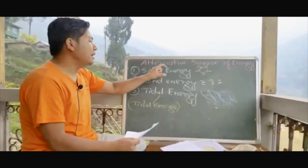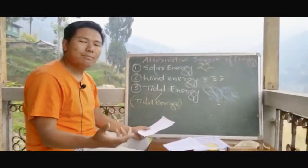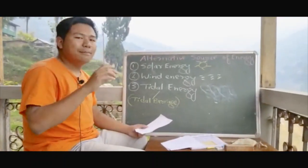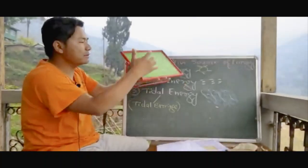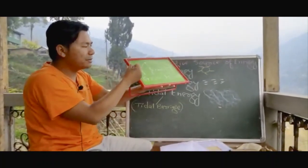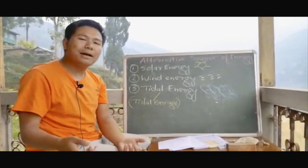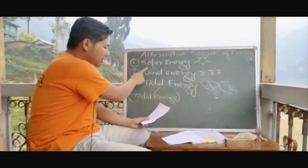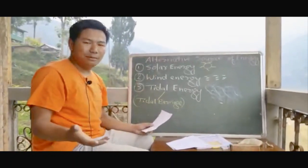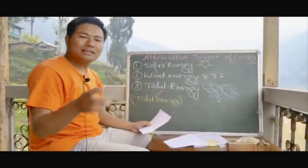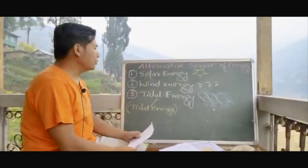Whatever energy comes from the sun, we can trap it and use it as an alternative source of energy. We can use solar energy through solar cookers, solar cells, solar batteries, and solar panels. Energy from the panels can be stored and converted for use. The only disadvantage is that solar energy is available only during the daytime, and on cloudy days it is also not possible to trap that energy.